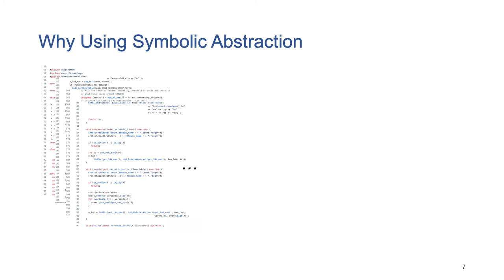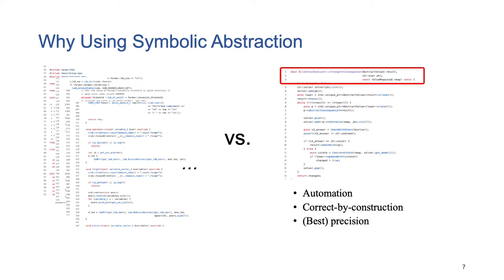Conventionally, to implement a numerical abstract interpreter, we need to independently design and implement transfer functions for many different statements, such as addition, multiplication, branching, assignment, join, meet, and so on. In comparison, symbolic abstraction allows us to automatically synthesize correct and the most precise transfer functions.